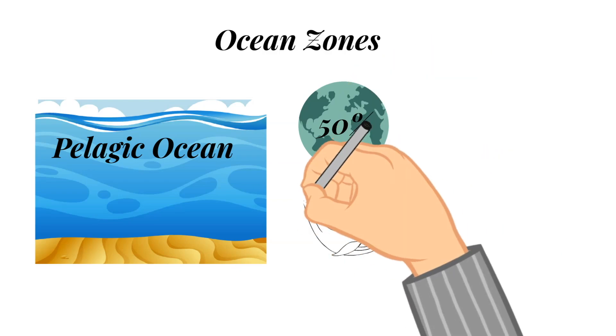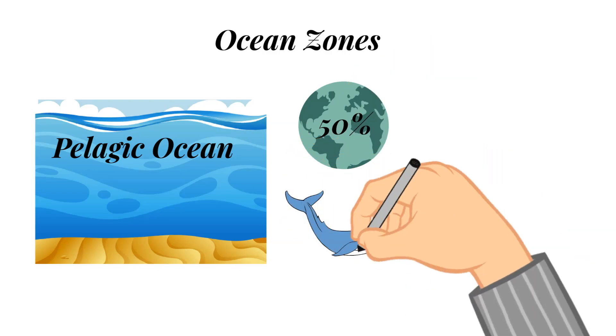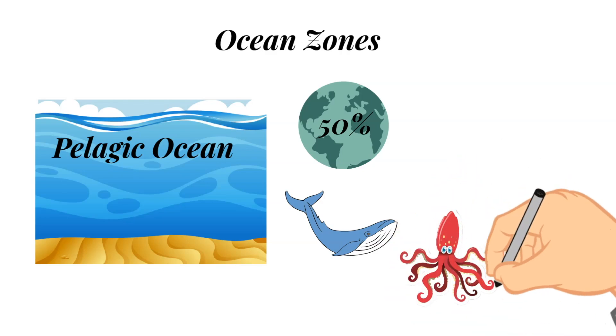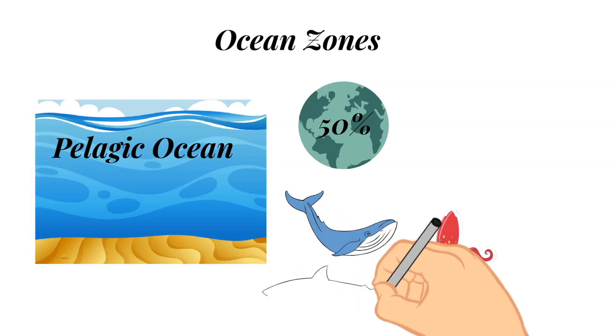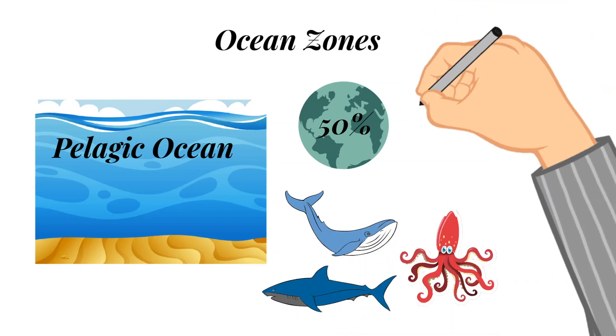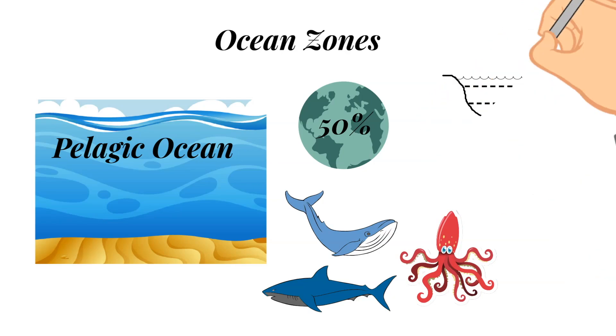Scientists, as they've begun to study the pelagic ocean, have observed and studied that these different creatures actually exist at different layers under the surface of the water. And these are called the ocean zones. And so we're going to start from the shallowest zone and go to the deepest.